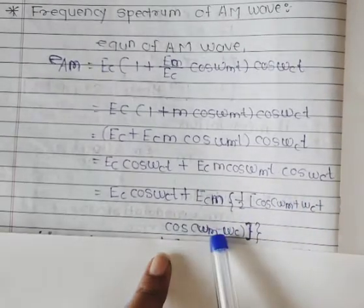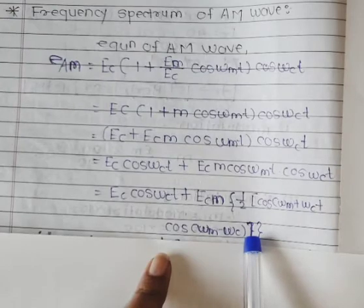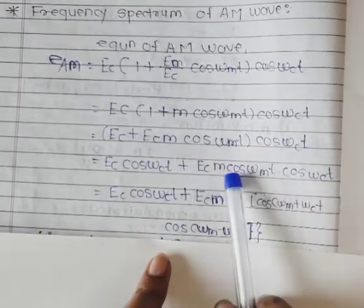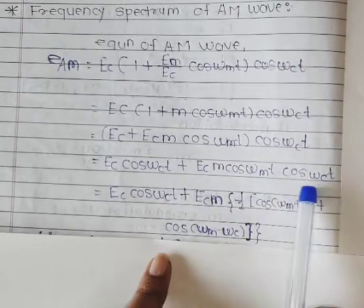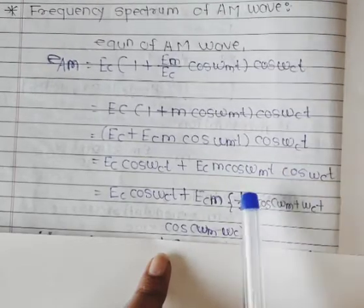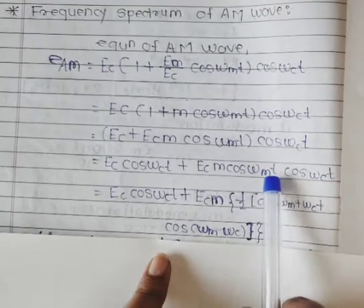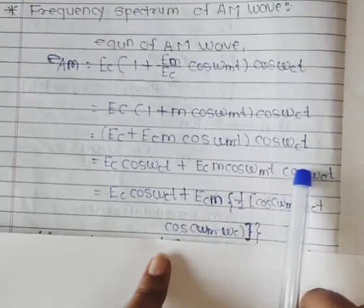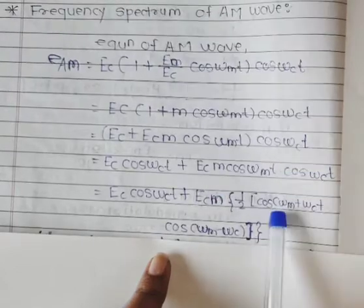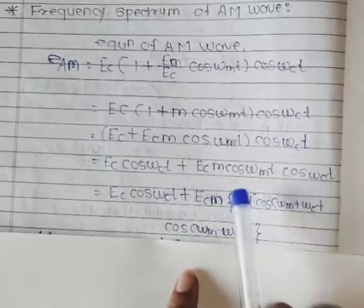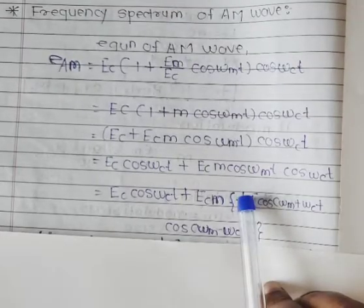This formula is called cos(a)·cos(b). We have put this formula here, so next what is going to happen?